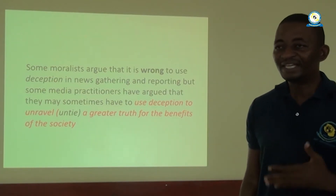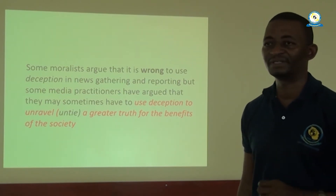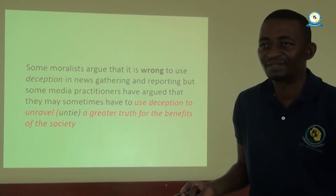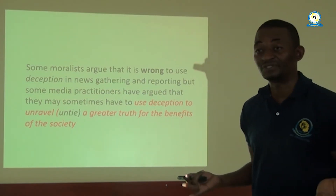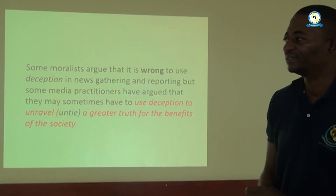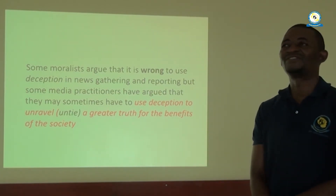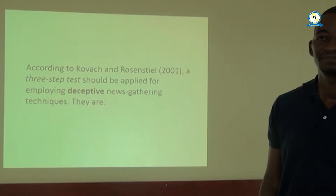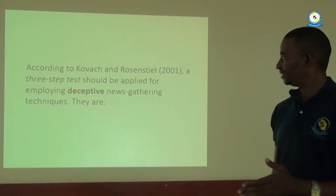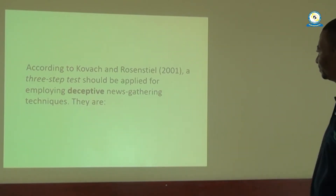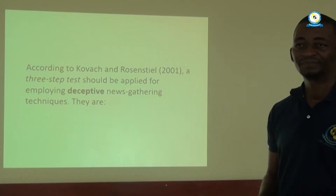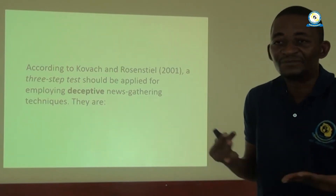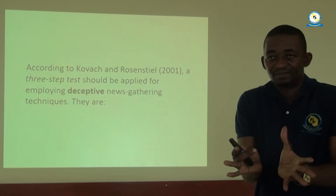Some journalists use hidden cameras, recorders, and act as undercover participants in criminal situations and other forms of deception to get information for publication. But there must be justifiable reasons for a journalist to do that. Kovach and Rost (2001) came up with a three-step test to be applied when employing deceptive techniques in news gathering.